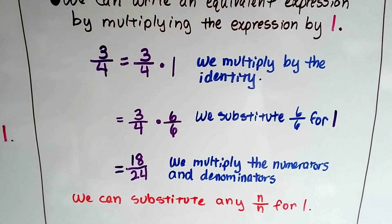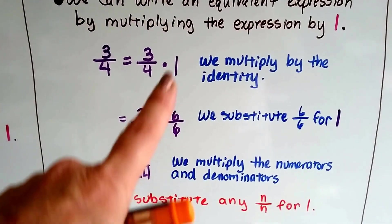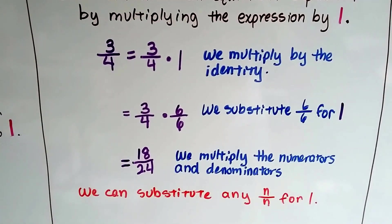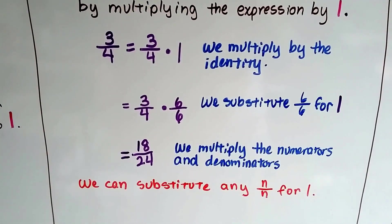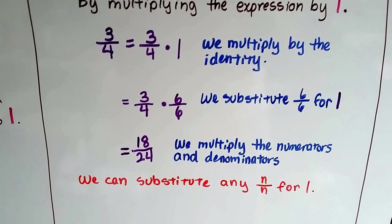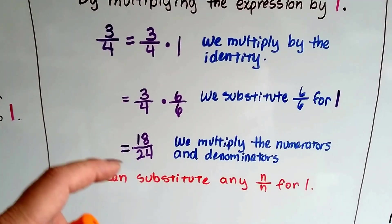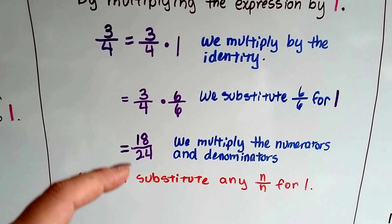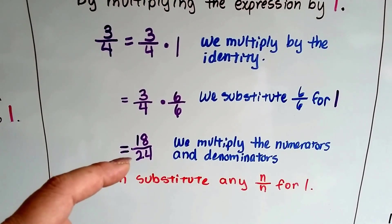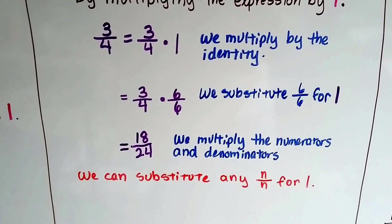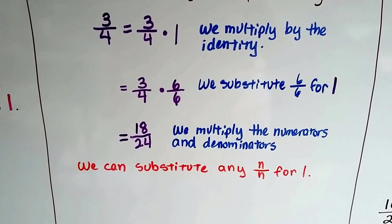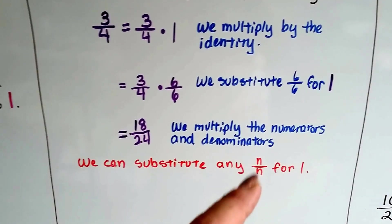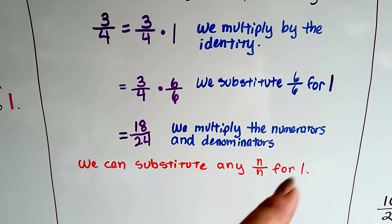So let's say we had 6/6ths for 1 — we substitute 6/6ths for a 1. We have 3/4ths times 6/6ths, and we're going to get 18/24ths. We multiply the numerators and denominators to get 18/24ths. And that's an equivalent fraction to 3/4ths. So we can substitute any number over that same number for 1.